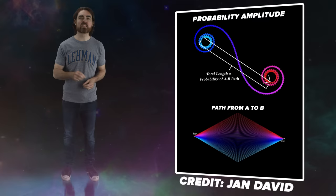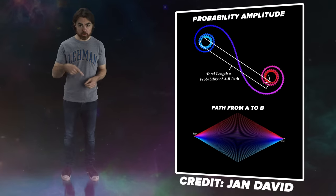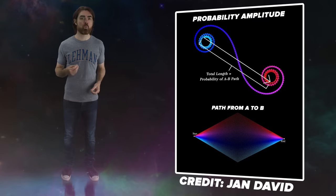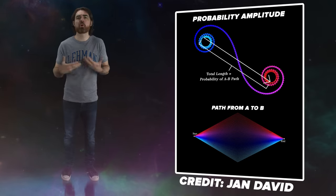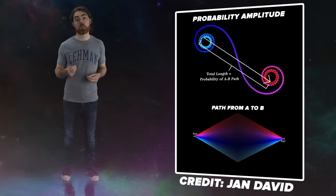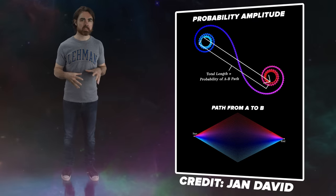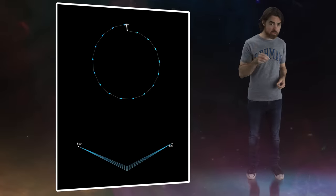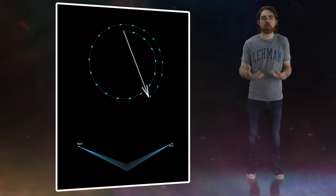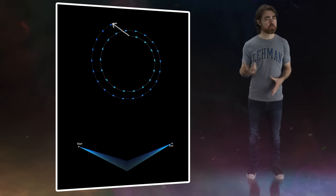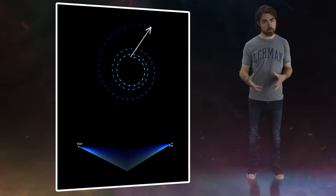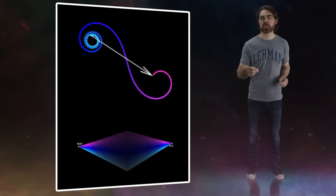But if two paths contribute probability amplitudes pointing in exactly opposite directions, they cancel each other out. This is equivalent to the wave functions along those paths being perfectly out of phase when they reach the destination — they destructively interfere. When Feynman used the action quantity to figure out the probability amplitudes of his infinite paths, something amazing happened: all of the really crazy paths cancel each other out. Only the most sensible paths — those with the least action — add significantly to the probability.